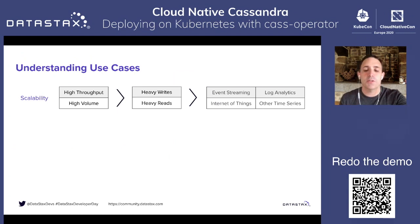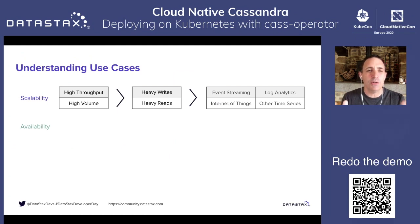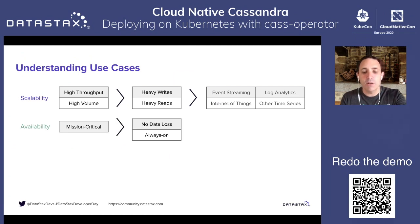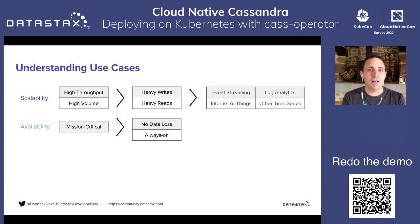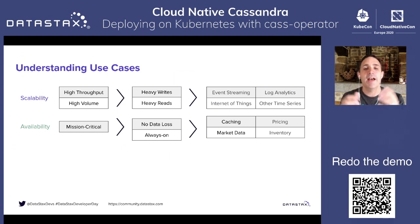The second range of use cases for Cassandra is to leverage availability. The data in the cluster is replicated multiple times. That means you can lose any of the nodes and it's not a big deal — no data loss and the system is always on. Remember: peer-to-peer, no master, and data is replicated. So the use cases include caching, market data, pricing, inventory, and many more.